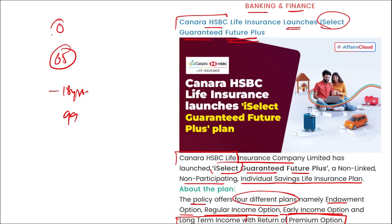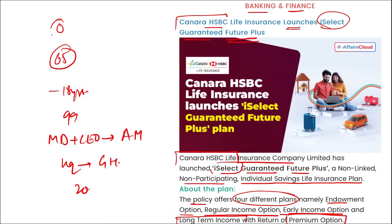Canara HSBC Life Insurance Company Limited: Managing Director and CEO is Anuj Mathur, headquartered in Gurugram, Haryana, and it was established in 2008.